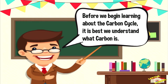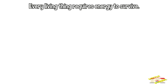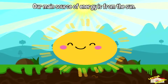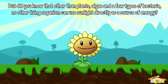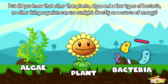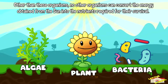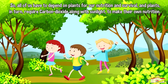Before we begin learning about the carbon cycle, it's best we understand what carbon is. So why is carbon important? Every living thing requires energy to survive. Our main source of energy is from the Sun, but other than plants, algae, and a few types of bacteria, no other living organism can use sunlight directly as a source of energy.